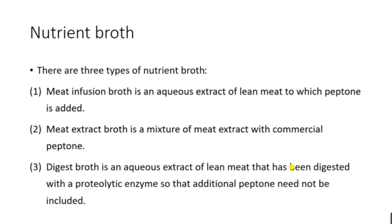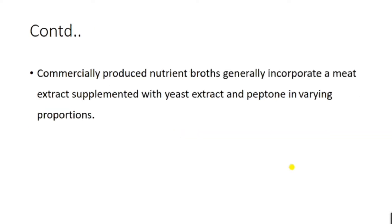So there are three different types of nutrient broth: meat infusion broth, meat extraction broth, and digestive broth. Commercially produced nutrient broth generally incorporates a meat extract supplemented with yeast extract and peptone in varying proportions.